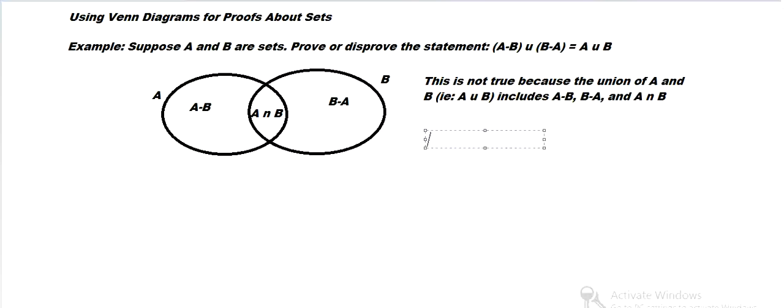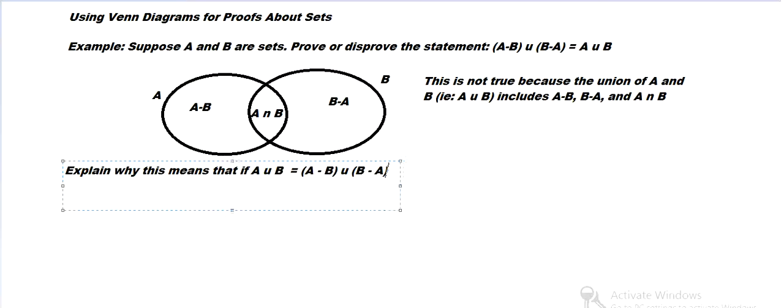Now, how about, here's a second question we might see. So explain why this means that if A union of B equals A minus B union B minus A. Explain that if the union of A and B is A minus B union B minus A. Then the intersection must be empty.